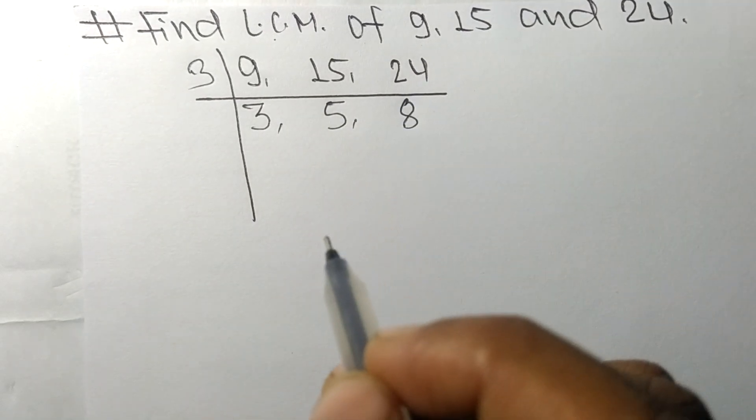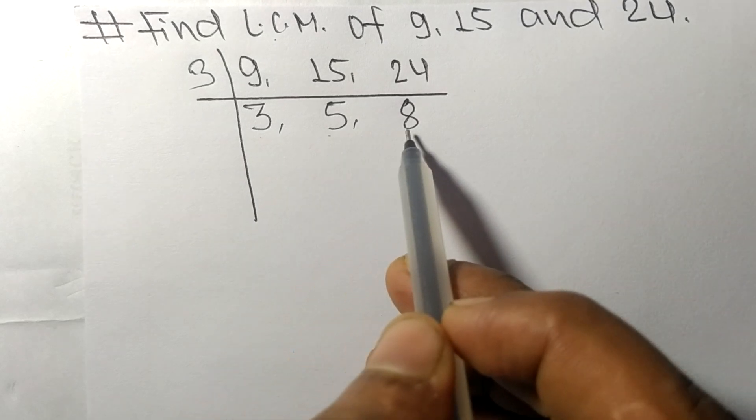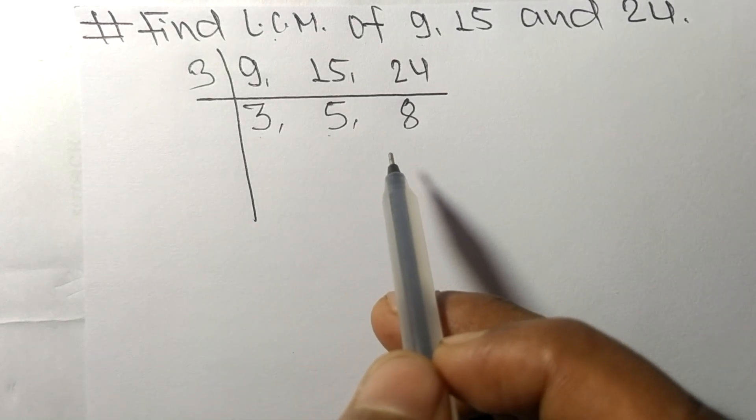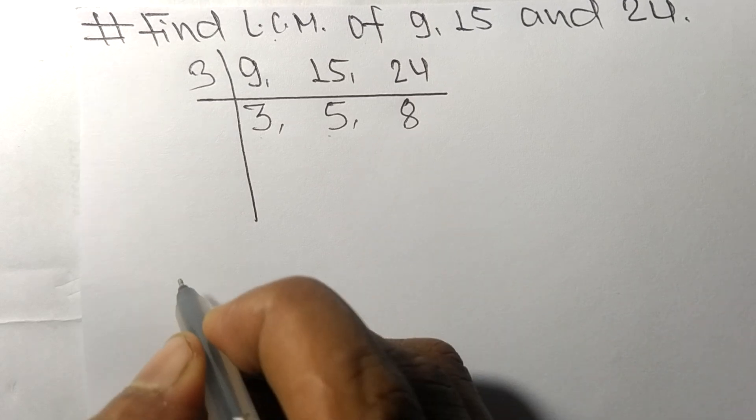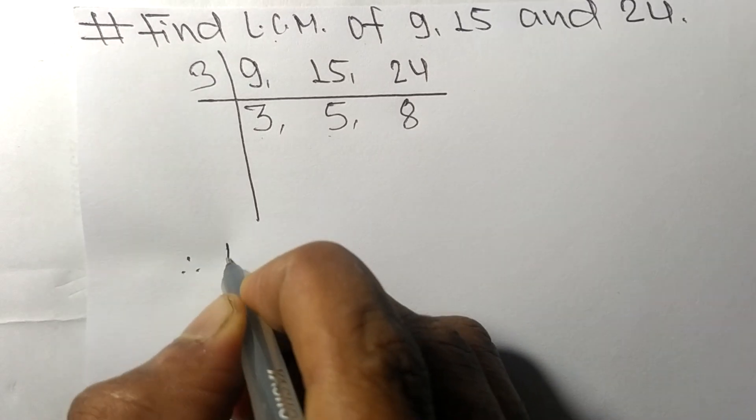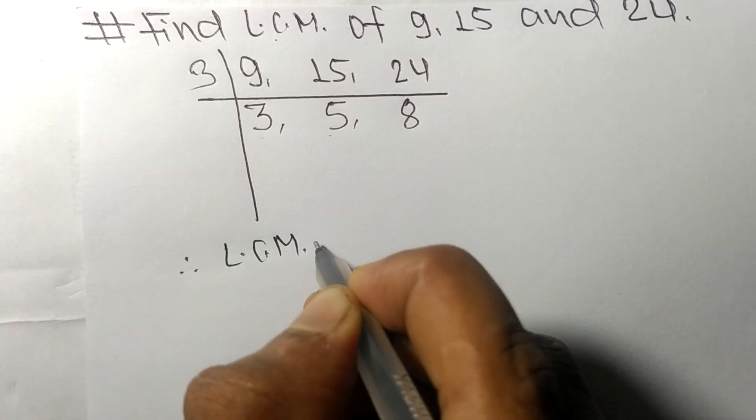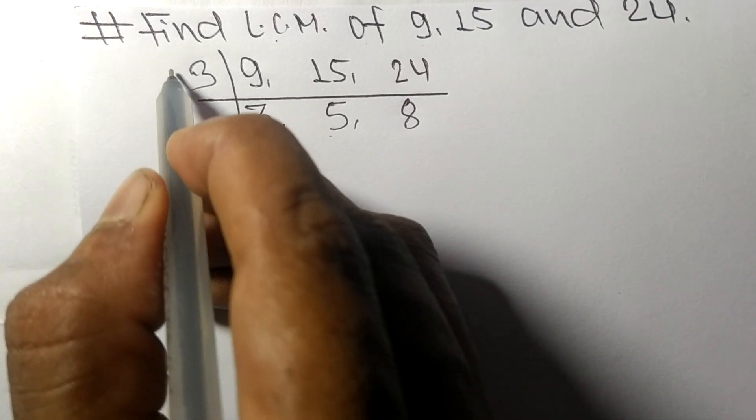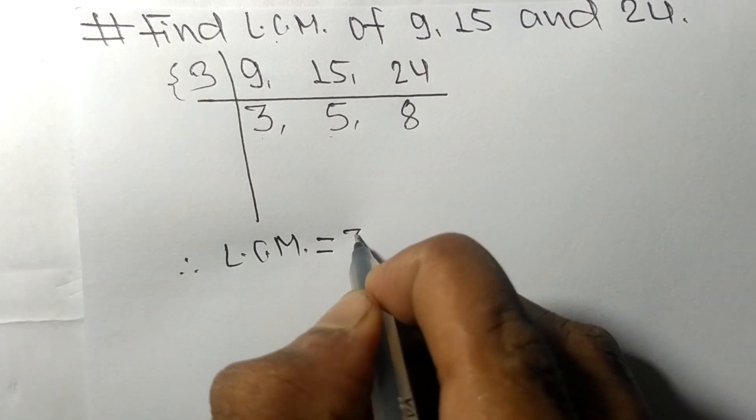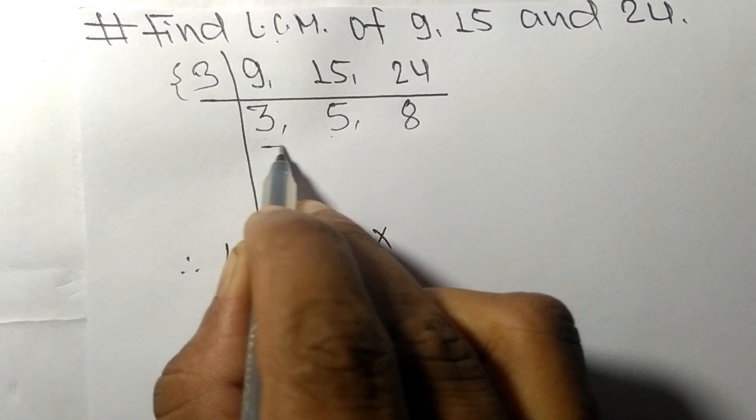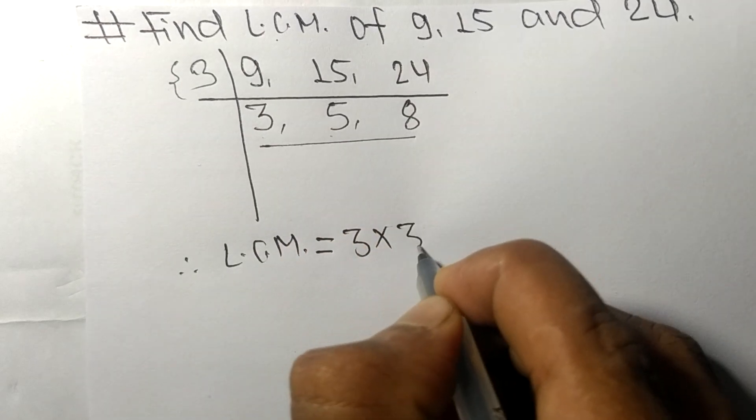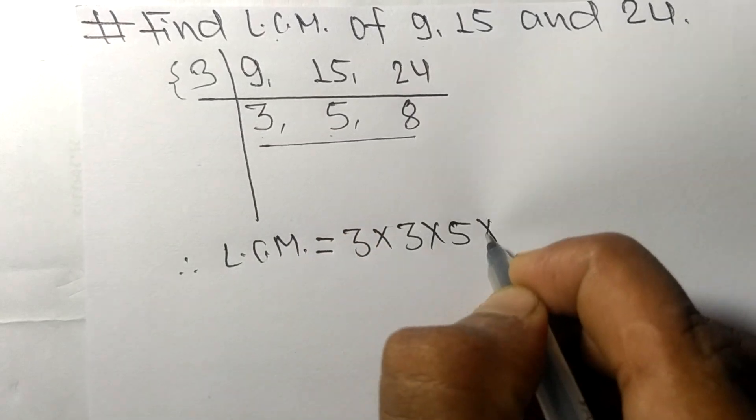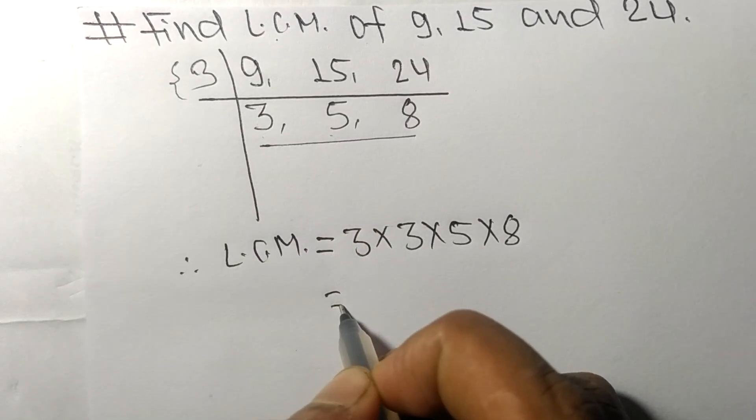Now we got 3, 5, and 8, which are not exactly divisible by the same number. Therefore, its LCM is equal to 3 from this side, and from this side it is 3, 5, and 8.